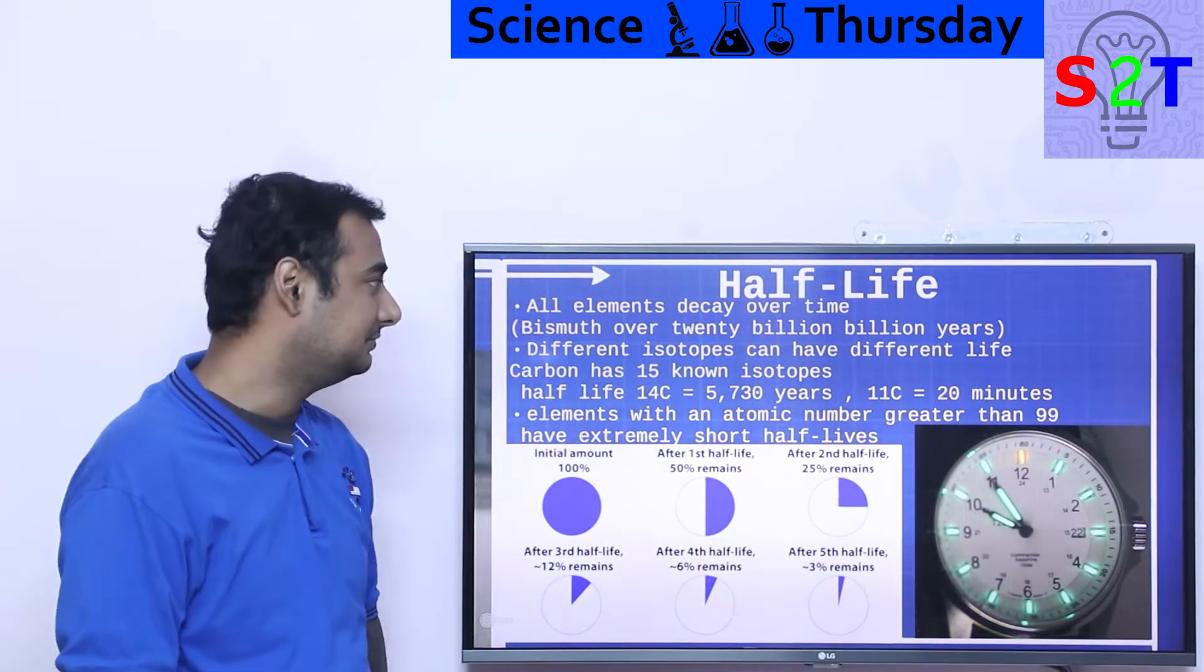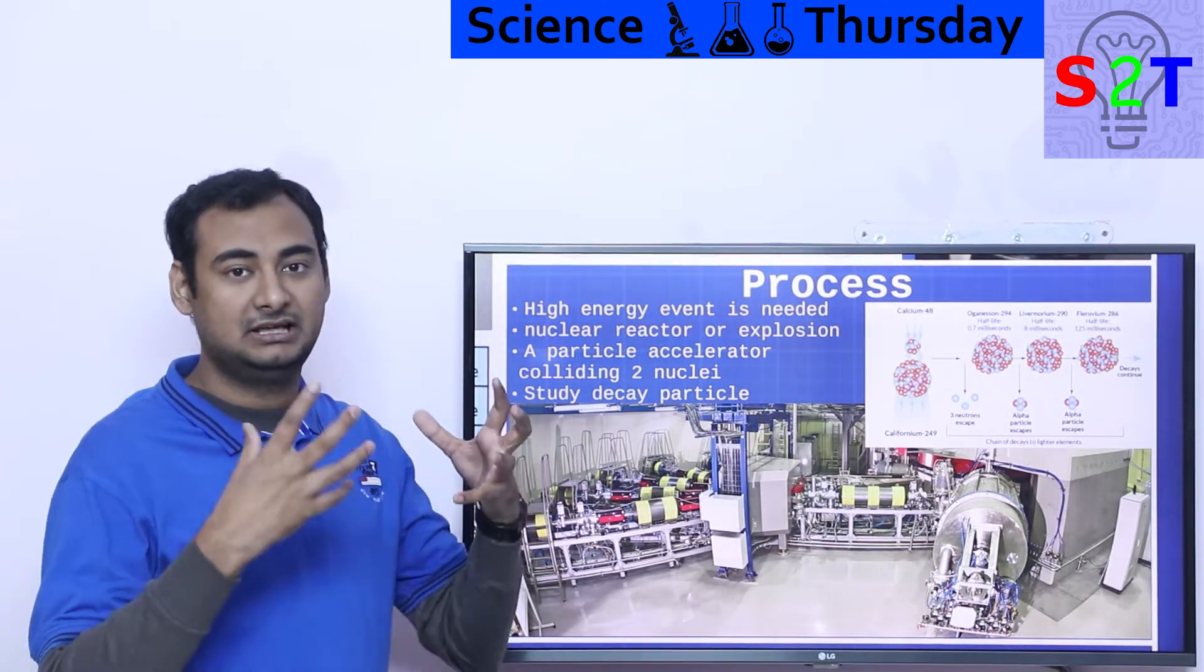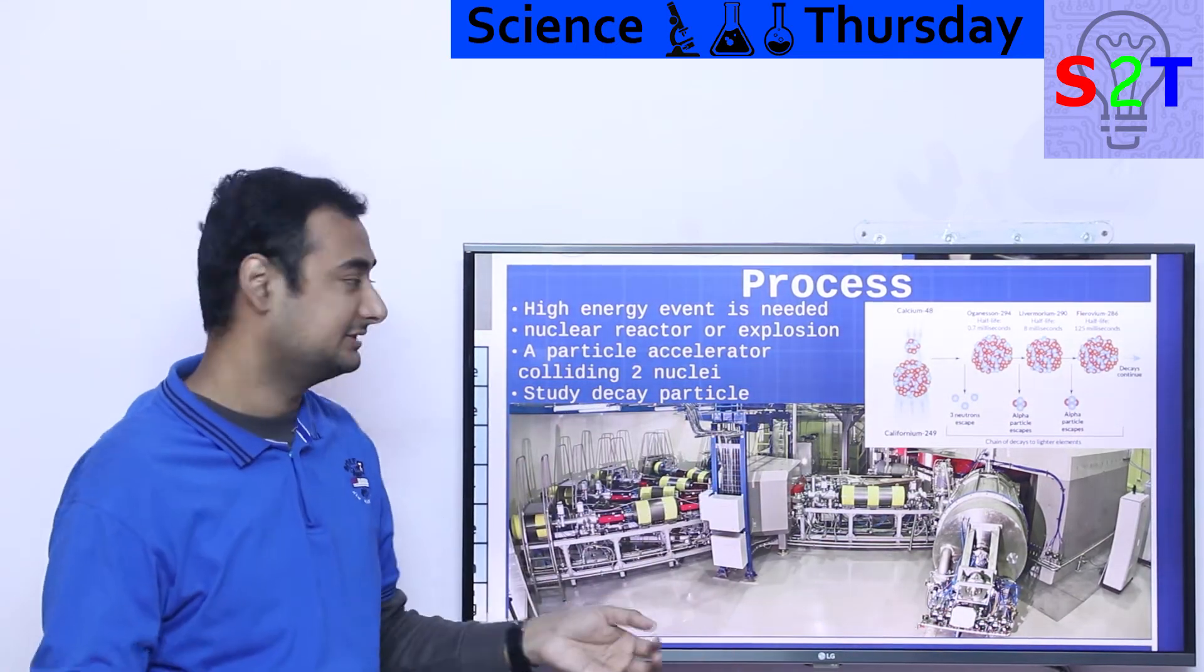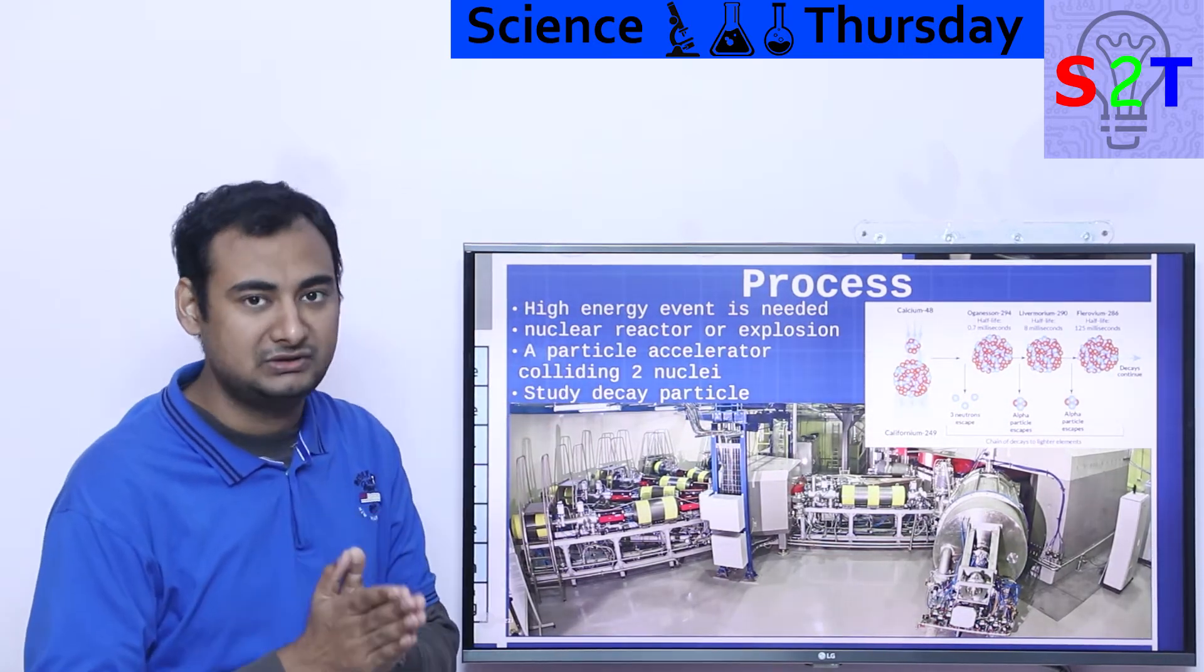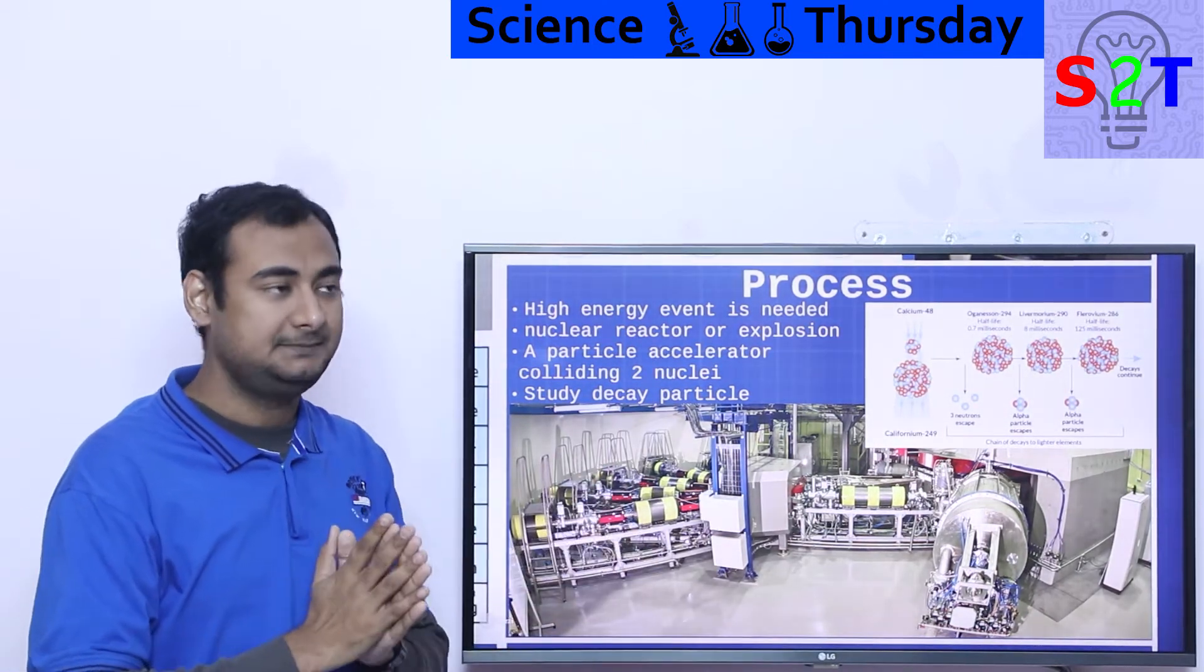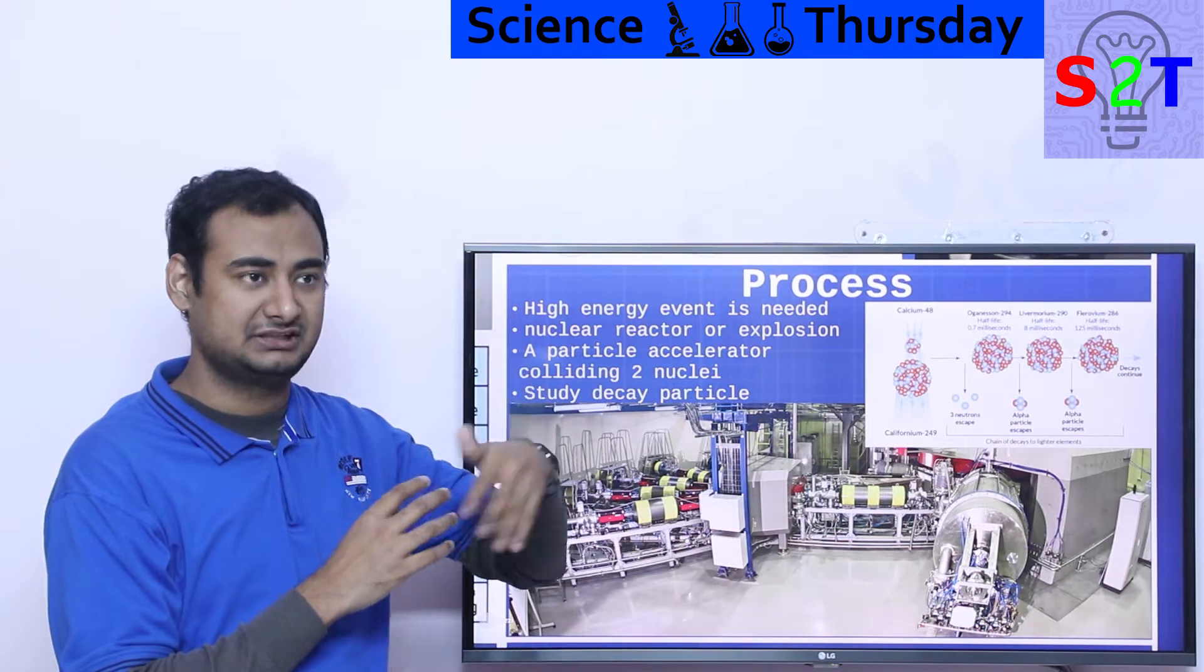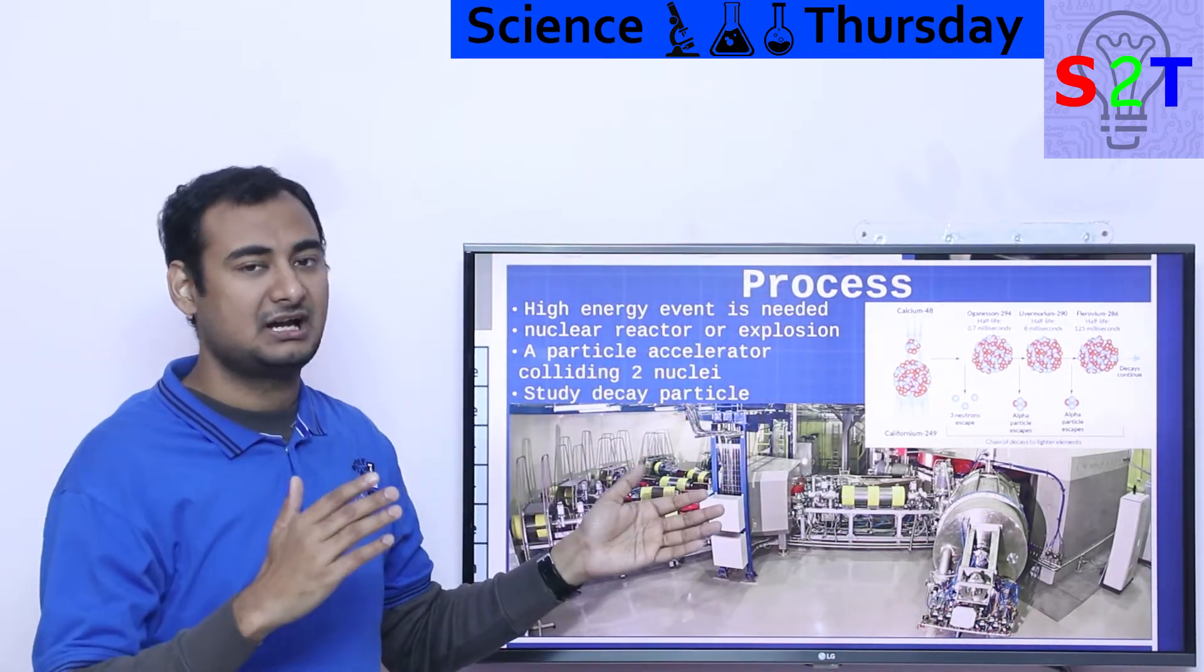How the heck do we take elements that do not exist and make them into reality? Simple reality - these are high energy events. If you take nuclear physics you will understand fusion is the fundamental creation of everything. You take hydrogen, you fuse it into helium. You take helium, you fuse it into heavier elements like carbon, then oxygen, then nitrogen. You keep going up until you reach iron.